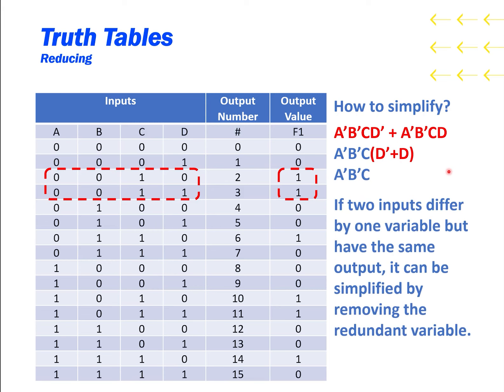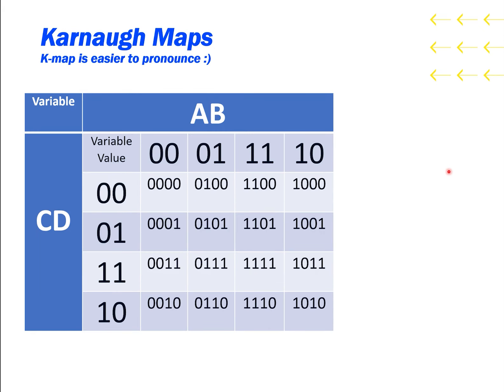In general, if two inputs differ by one variable but have the same output, it can be simplified by removing the redundant variable. And that's where K-maps come in.